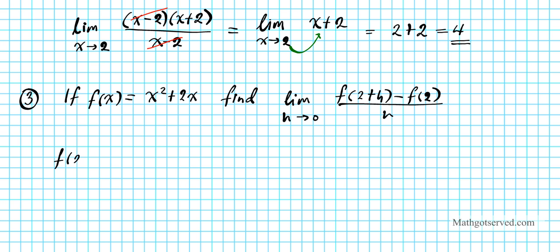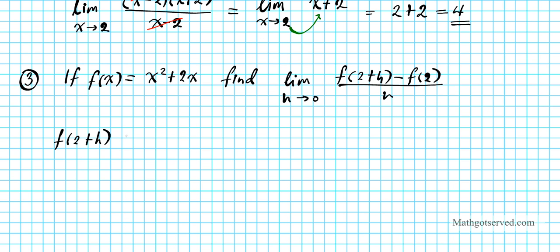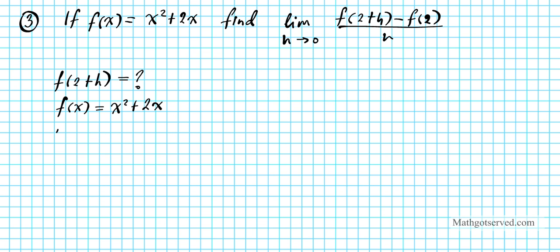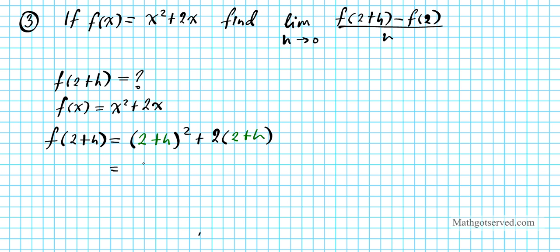First thing we're going to find is f of 2 plus h. We know that f of x is x squared plus 2x. So f of 2 plus h simply means anywhere you have the x you replace it with 2 plus h. So instead of x squared I'm going to have 2 plus h squared, and instead of 2x we have 2 times 2 plus h. So we're basically composing f of x with 2 plus h. To evaluate this we just expand: 2 plus h times 2 plus h, and you distribute to get 4 plus 2h... 4 plus 2h.